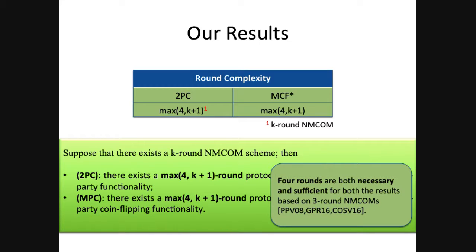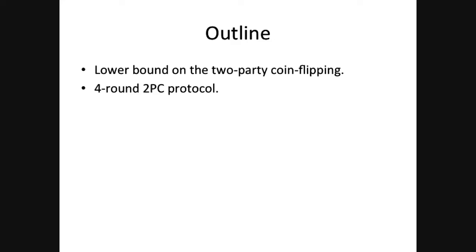Using this instantiation, we can actually construct protocols for coin flipping and two-party circuit computation. I will start by giving you a sketch of the lower bound for coin tossing, and then I will give you the 4-round 2PC protocol.